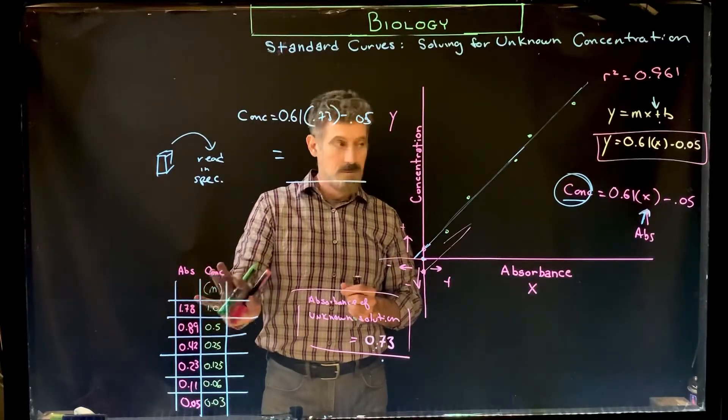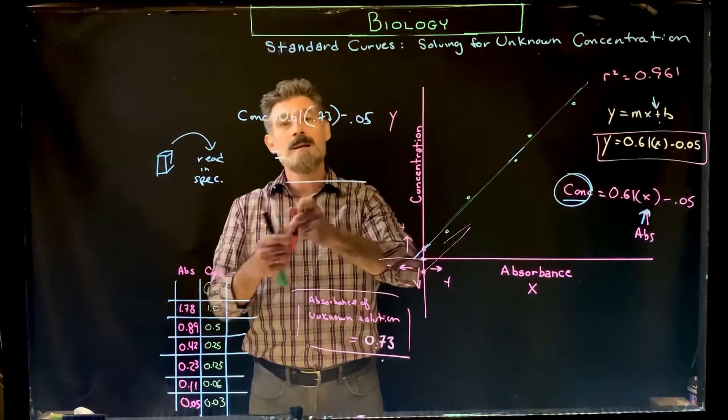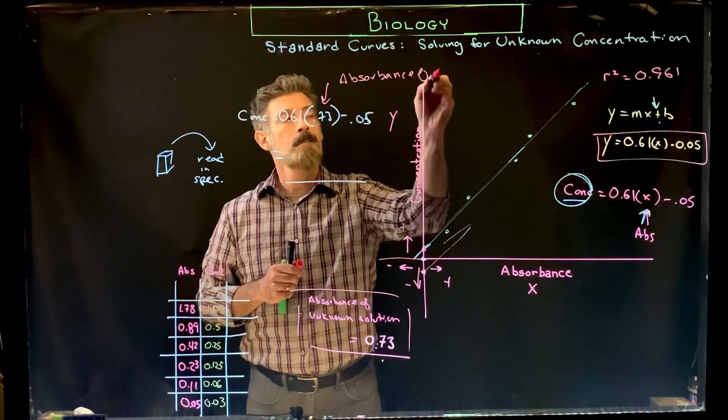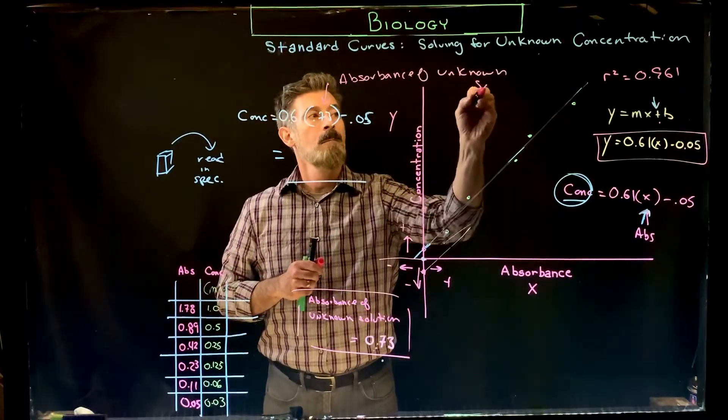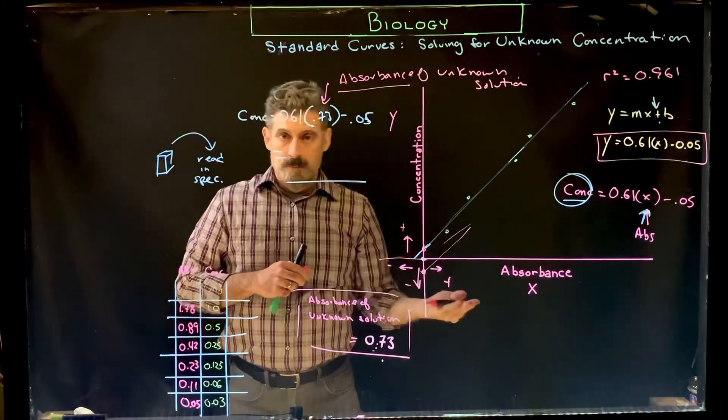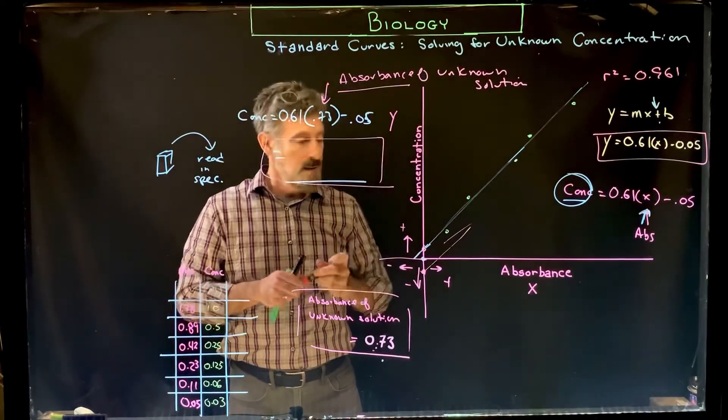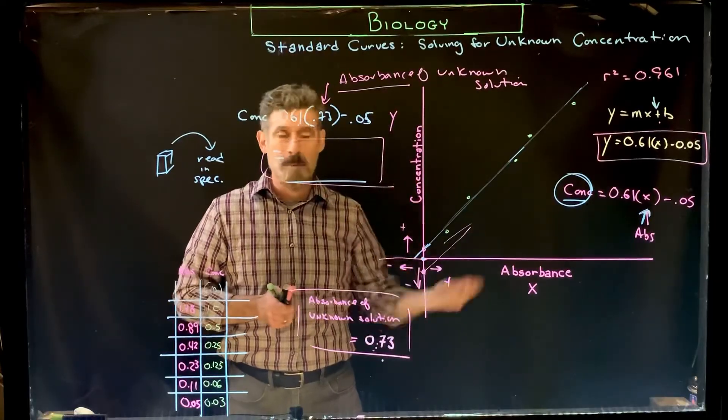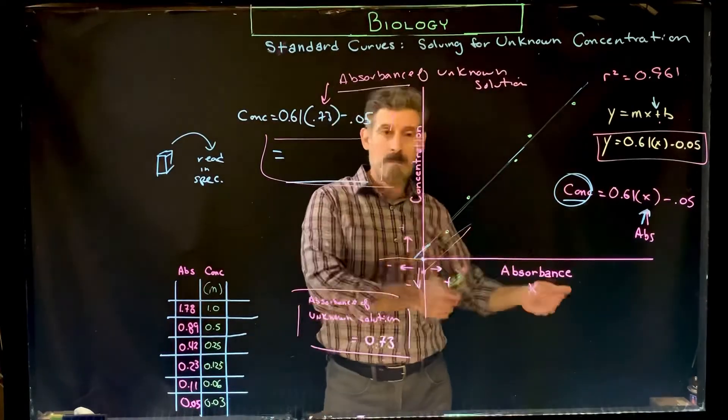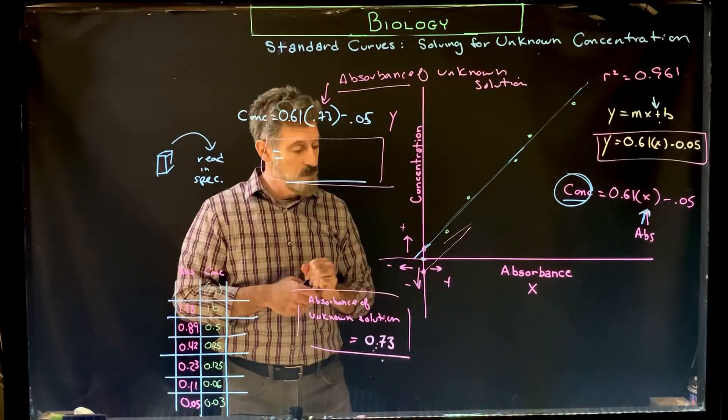If you know how to make the standard curve, which you should, to solve for the unknown is very simple. All you have to do is take the equation and then you just plug in absorbance for x. So you put the absorbance for the unknown solution in here, solve it, and then you get the concentration. That's it. That would be the way to do it. If you had multiple unknown solutions, you just solve it multiple times. You use the same exact equation, you just put in different values for x each time, and then you get a different number each time that you solve it. Those are the concentrations that you would solve for for those unknowns. It should be very straightforward.